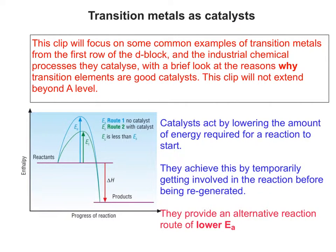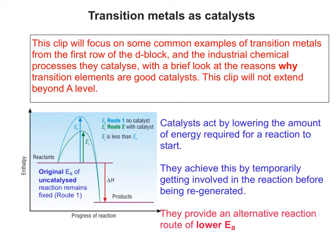Looking at this graph from first-year chemistry, the idea is that catalysts act by lowering the amount of energy required for a reaction to start. They achieve this by temporarily getting involved in the reaction before being regenerated at the end. An alternative reaction route of lower activation energy is provided by the catalyst. What it doesn't do is change the original activation energy of the uncatalyzed reaction — that's sometimes a misconception. It offers an alternative route with a lower activation energy, while the original remains fixed.